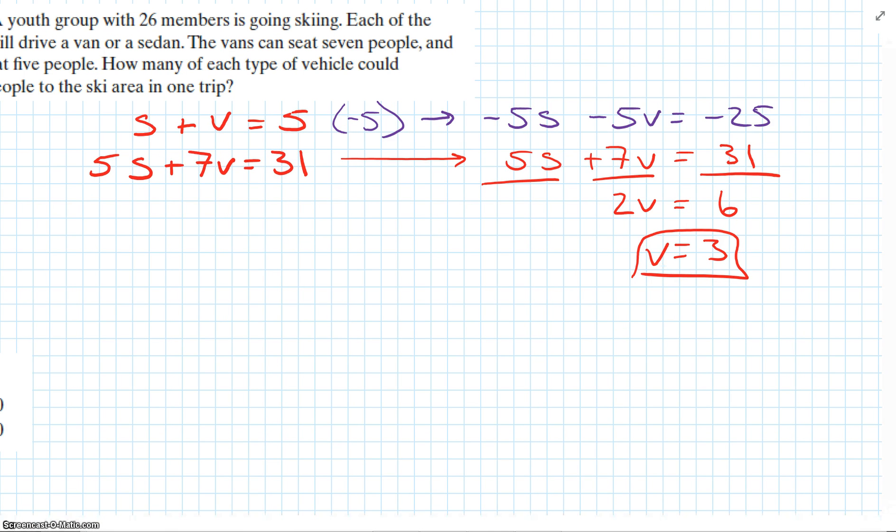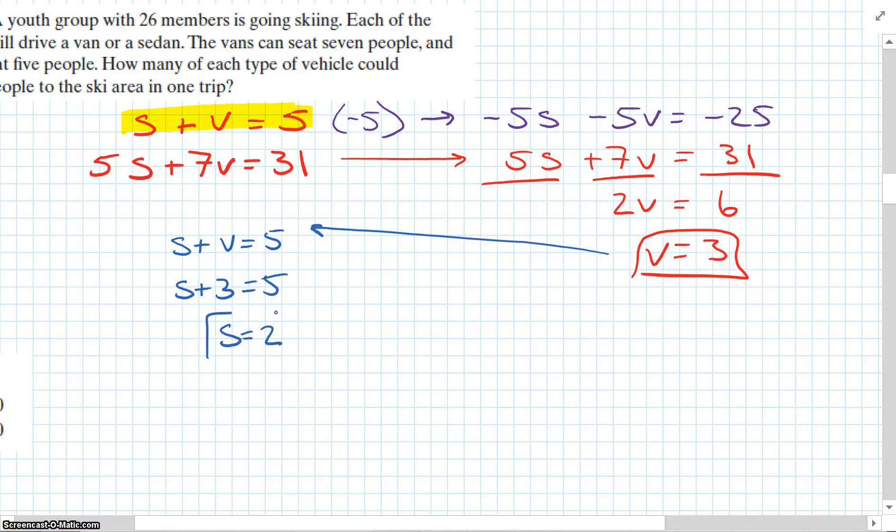So if we're going to take three vans, we have an equation right here to tell us how many sedans to take. I have s + v = 5. s + 3 equals 5. Subtract three from each side, s equals 2. So we need two sedans and three vans.